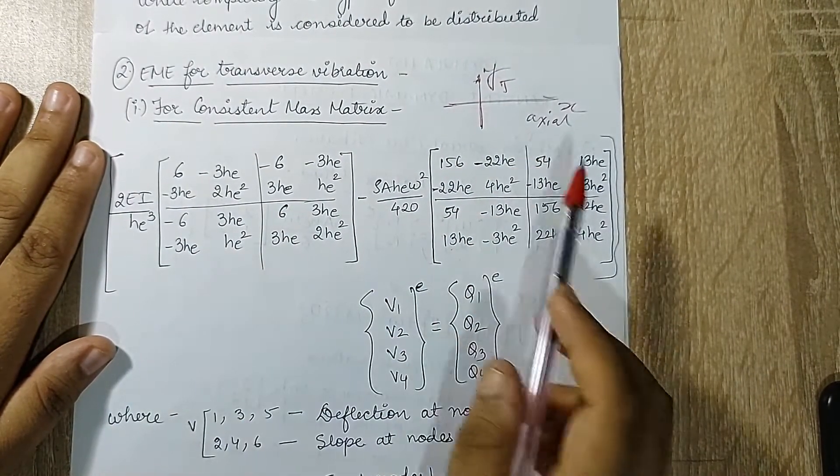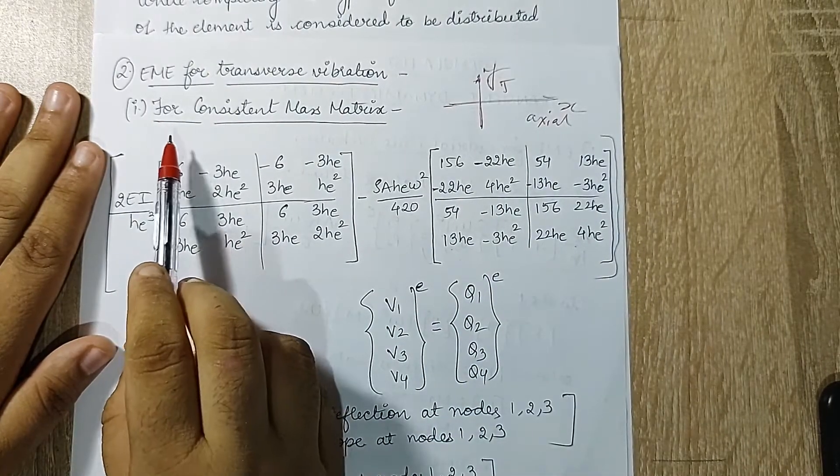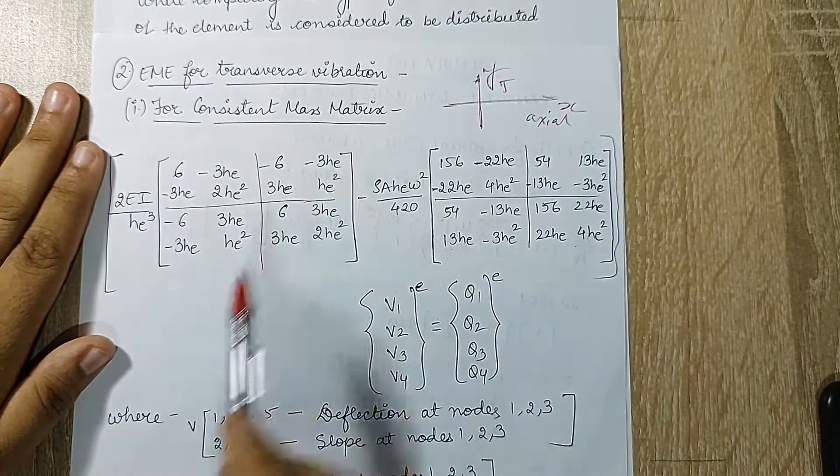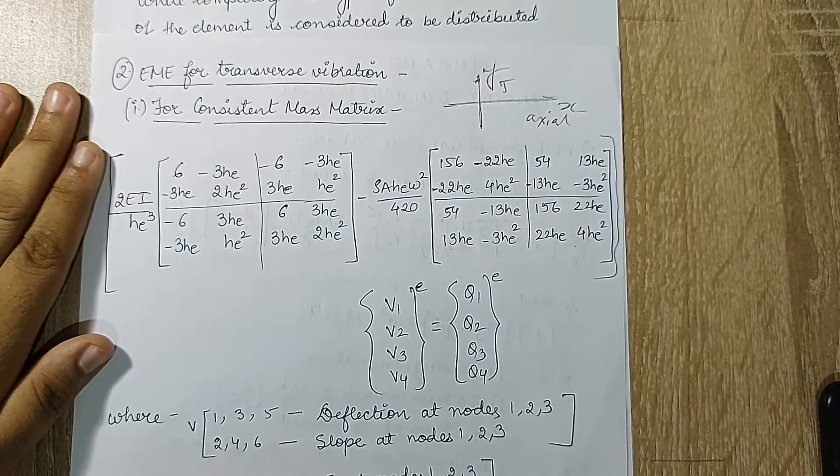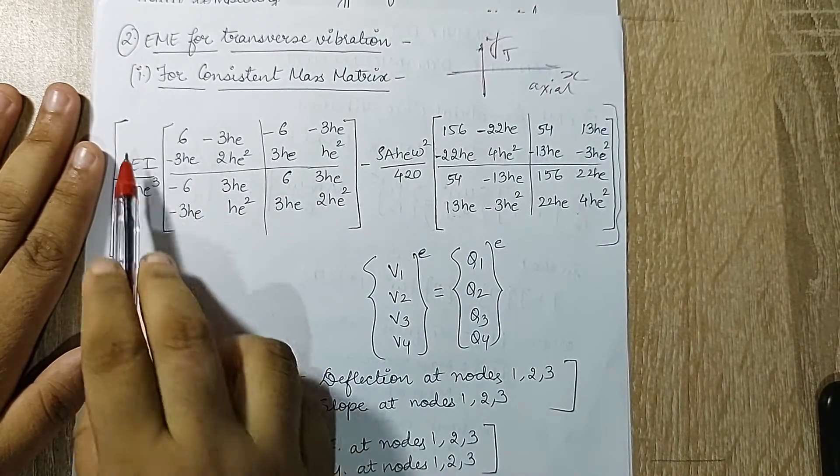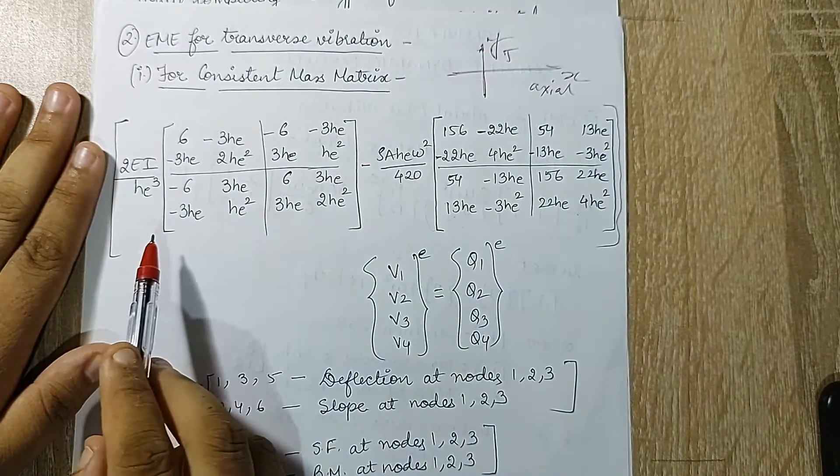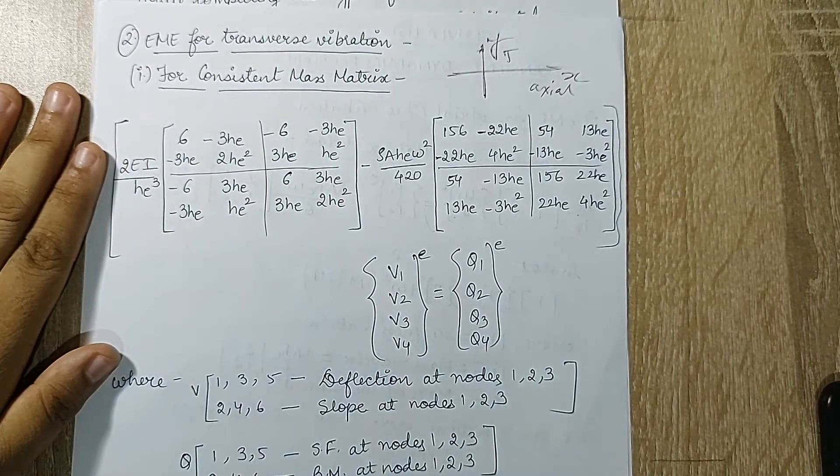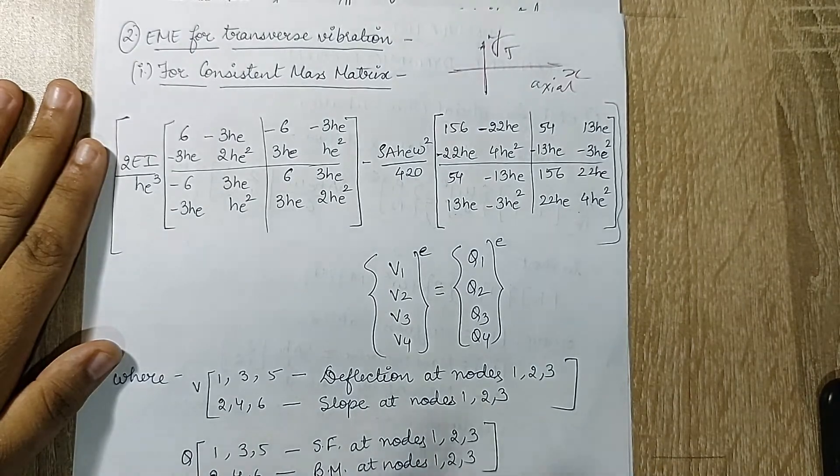Perpendicular to your axial direction, there will be again two methods. For consistent mass matrix, this is the equation to be used. This is not very difficult. You will only have to look carefully. You have seen this much portion of the equation already. This part we have used when we were talking about truss element and beam element as well.